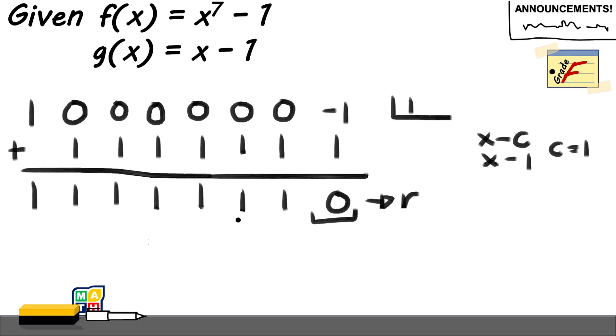Now, this coefficient here will be used to describe our final result or our quotient. Now, this 1 here is the coefficient now of the term with degree n minus 1. Where n is the degree of our dividend.